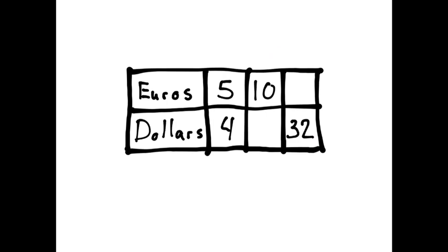Alright, this time we're comparing euros to dollars. This one looks easier to me if I use multiplication. So five, how do I change that into a ten? Well, multiply it by two. Five times two is ten. Well, four times two is eight.